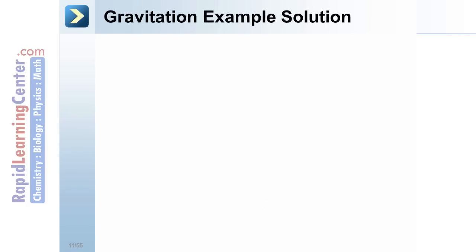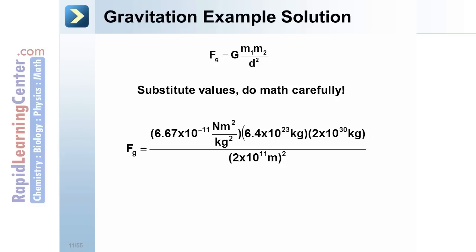Gravitation Example Solution. Use our Gravitation Law. Substitute the values. All of our values are available to us. We have the constant, big G. We have two masses, and we've got a distance, which must be squared.